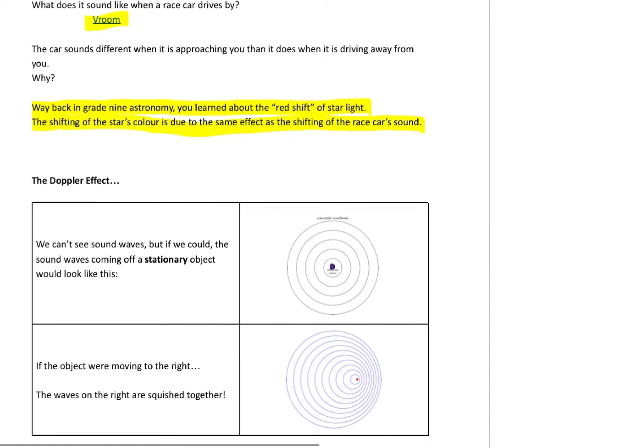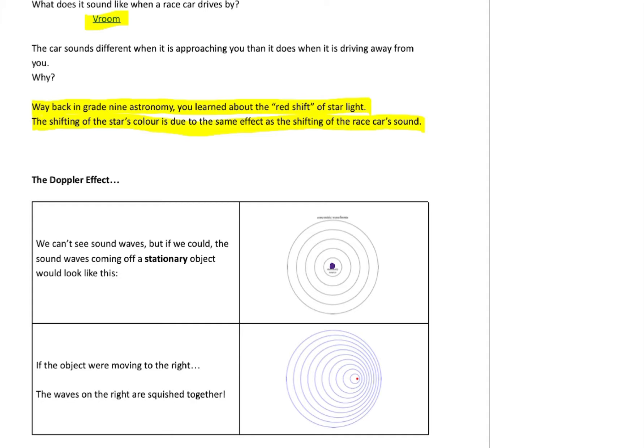If we had that special camera and the object was moving to the right, if we could take a picture of the sound waves, this is what it would look like. They were traveling the same speed in all directions, but as the object moved, those waves that were moving to the right—the thing that was making the waves also moved to the right, so they didn't spread out as much. So on this side, the waves are squished together, and on the side behind the object, they're spread out.